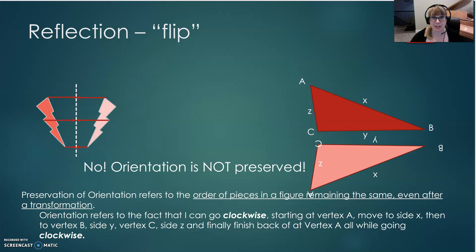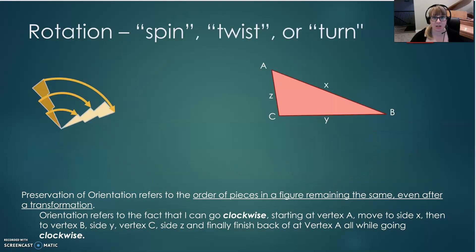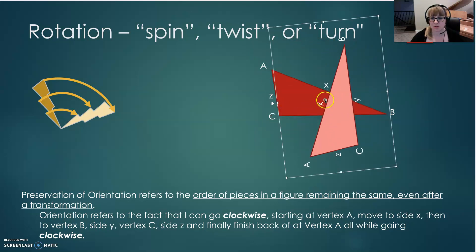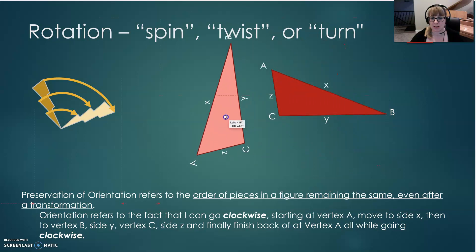Let's take a look at our final transformation, rotation. Remember that a rotation is a spin, twist, or a turn. So, we know our goal, AX, BY, CZA. Let's perform a rotation. Now, again, that center of rotation is going to be somewhere here in the middle. I'm just going to move it so that we can compare.